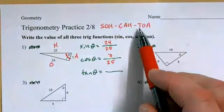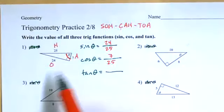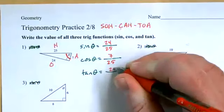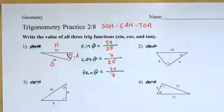And then TOA. Tangent is opposite over adjacent. Opposite was 24, adjacent is 7. So for these first four problems, we're just writing out the equations for sine, cosine, and tangent. Any questions on number one?